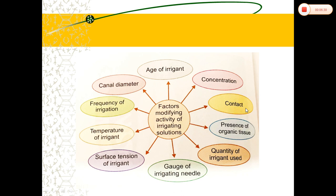Be sure to remove all organic tissue using these irrigants. The fourth factor is the quantity of irrigant used, which is directly related to its ability to remove debris from the canal. Sodium hypochlorite removes organic tissue and debris rapidly because of its tissue-dissolving property. When it comes to saline and other irrigants, it varies and takes more time, so you must select the quantity of irrigant accordingly.